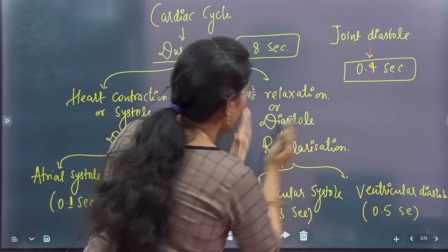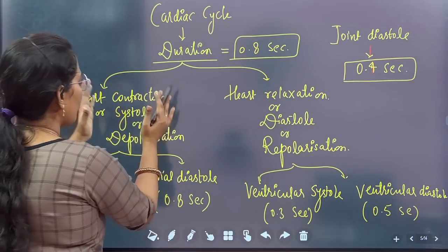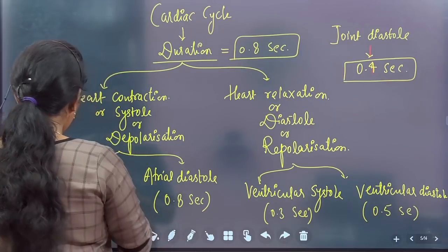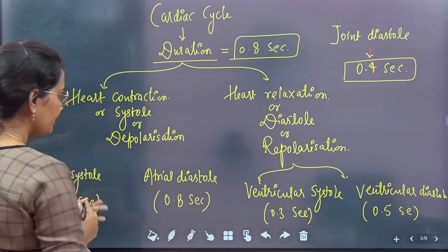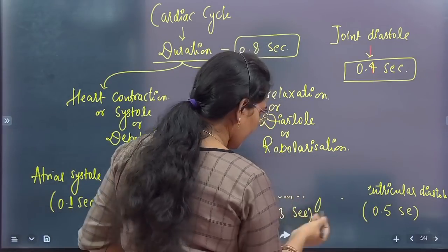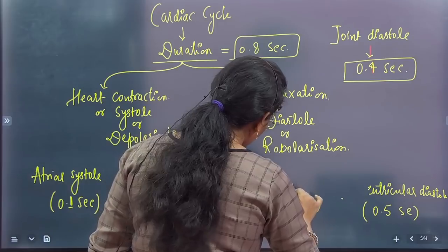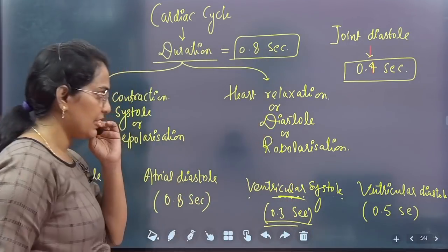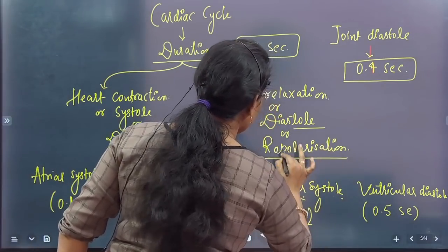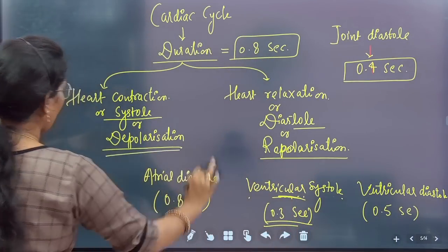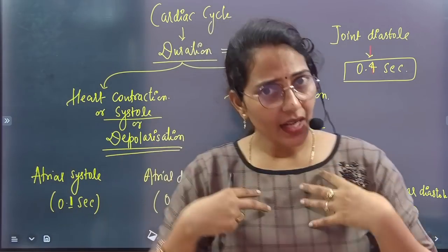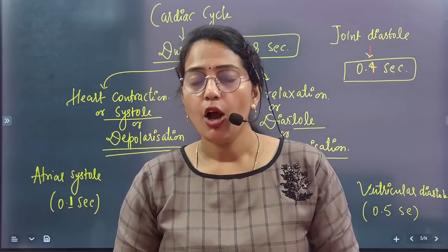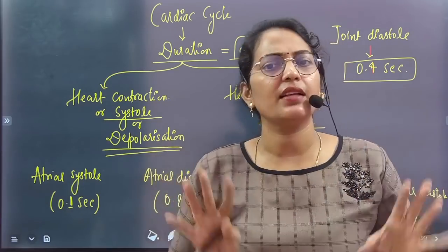Heart contraction is called systole (or depolarization) and heart relaxation is called diastole (or repolarization). In the cardiac cycle, the atria contract and relax, and the ventricles also contract and relax. Atrial systole is 0.1 seconds, and atrial diastole is 0.7 seconds — together 0.8 seconds. Ventricular systole is 0.3 seconds and ventricular diastole is 0.5 seconds — together 0.8 seconds.